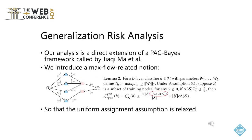In the paper "Subgroup Generalization and Fairness of Graph Neural Networks," the authors analyzed the performance fairness among different subgroups of test nodes. Our work adapts their theoretical results to the analysis of data pruning — specifically, when analyzing the generalization risk of different subsets of training nodes on the given test set. More importantly, we eliminate their assumption of a uniform assignment, namely that each training node serves as the closest neighbor to the same number of test nodes. Instead, we introduce a novel notion related to max flow and use it to account for the representativeness of selected subsets in the generalization risk bound.